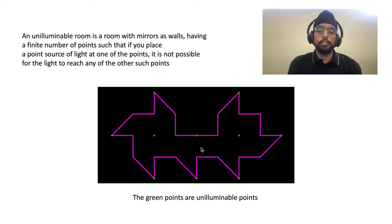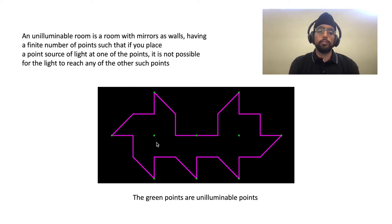In this example, you can see all of the green points are unilluminable points. So if you put a point source right there, it won't be able to reach any of the other green points, and if it hits one of the corners it will be absorbed.